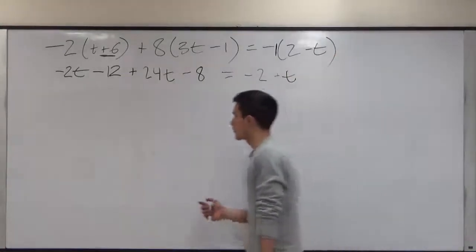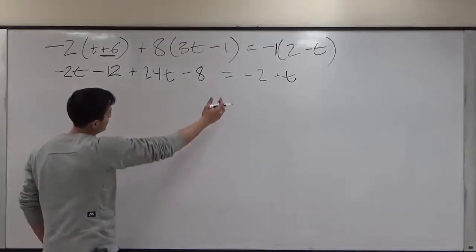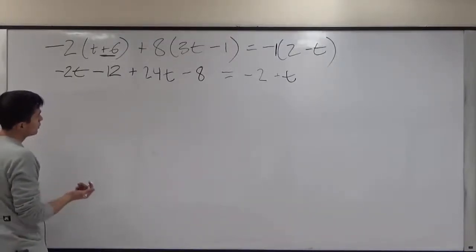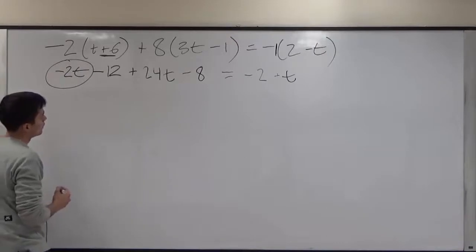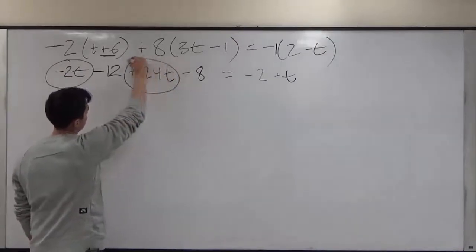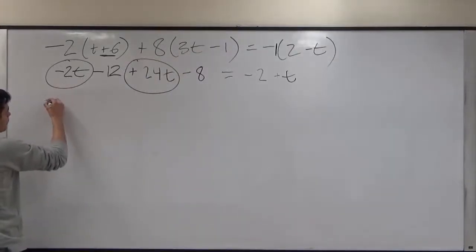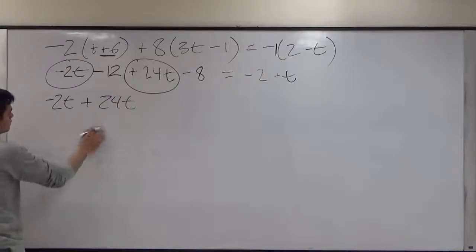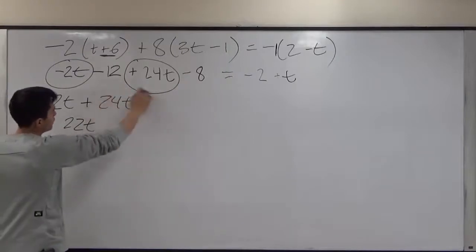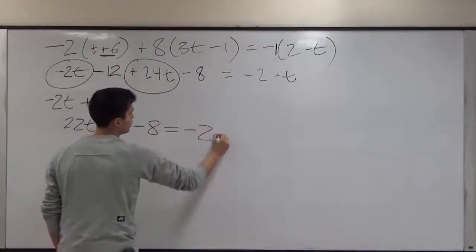So now we have opened up the parentheses and we are able to simplify this down even further. So in order to do that, we need to combine like terms. So one like term is negative 2t. Another like term would be positive 24t. So let's start with these two first. Negative 2t plus 24t, that would give us 22t. Then we can bring these numbers down. Minus 12 minus 8 is equal to negative 2 plus t.